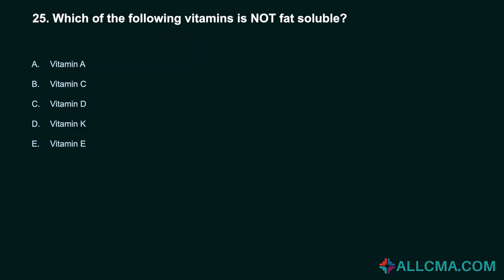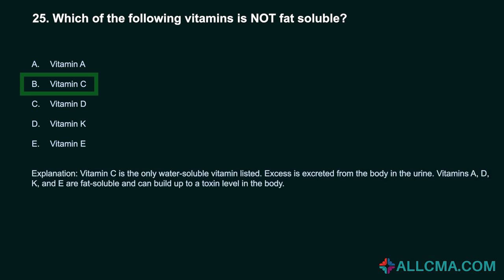Question 25: Which of the following vitamins is not fat-soluble? a) vitamin A, b) vitamin C, c) vitamin D, d) vitamin K, e) vitamin E. Correct answer: B, vitamin C. Vitamin C is the only water-soluble vitamin listed; excess is excreted from the body in the urine. Vitamins A, D, K, and E are fat-soluble and can build up to a toxic level in the body.